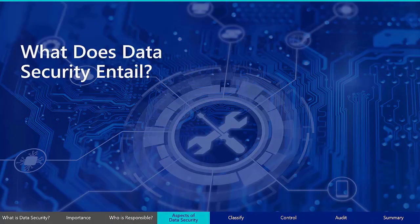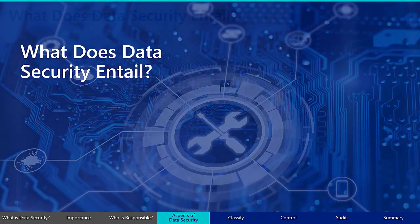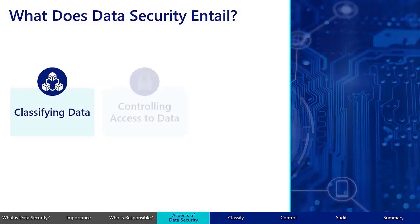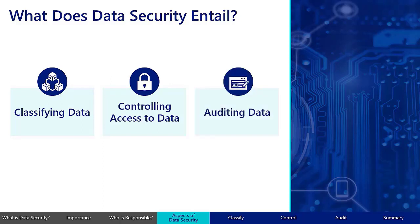What does data security entail? Overall requirements for data security come from stakeholders, government regulations, business concerns, legitimate access needs, and contractual obligations. But in general, there are three aspects to data security: classifying data, controlling access to data, and auditing data.